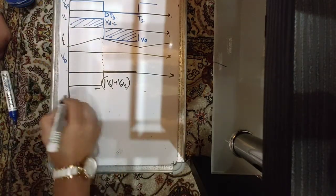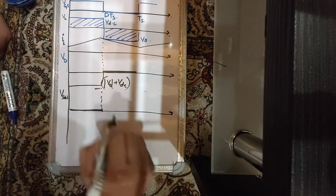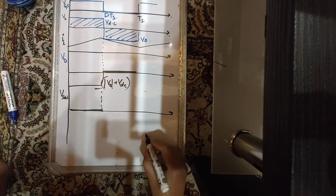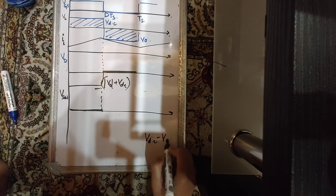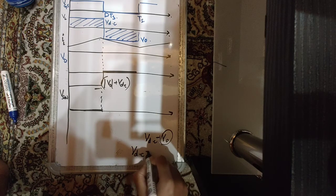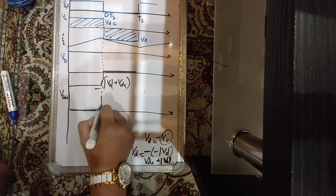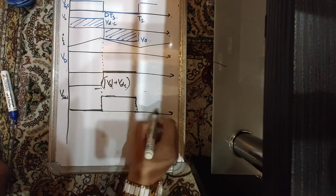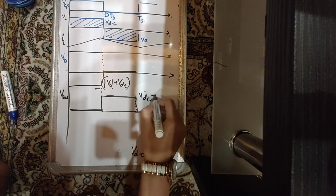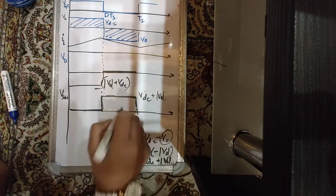For the switch voltage waveform: the switch is conducting (Vswitch = 0) in the first interval. In the second interval, Vswitch = VDC − V0 = VDC + |V0| (since V0 is negative in our convention). So the switch blocks a positive voltage equal to VDC + |V0|, confirming the higher voltage stress on devices in a buck-boost converter.